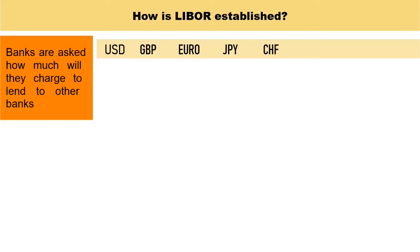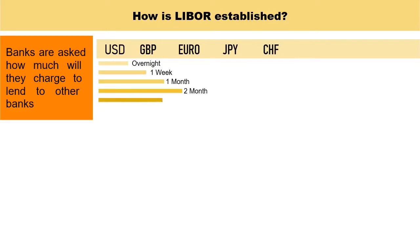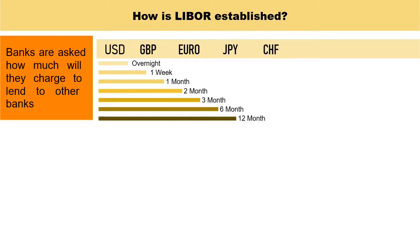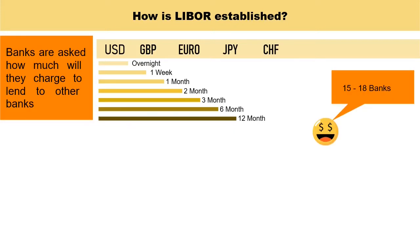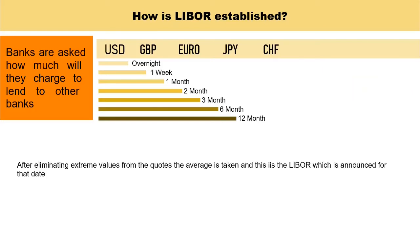LIBOR serves seven different maturities: overnight, one week, one month, two months, three months, six months, and 12 months. The combination of five currencies across seven maturities results in 35 different LIBOR rates being calculated and reported each day. The most commonly quoted LIBOR is the three-month US dollar LIBOR rate. Quotations are asked from around 15 to 18 major banks, and after eliminating extreme values, the average is computed for each currency across each maturity.